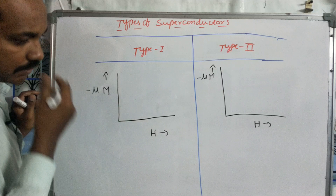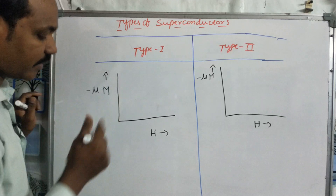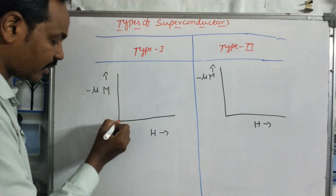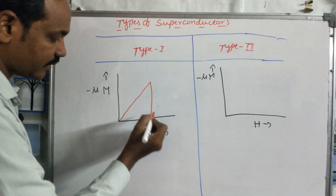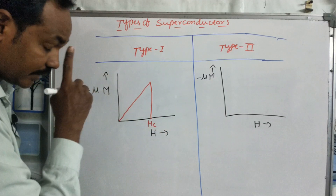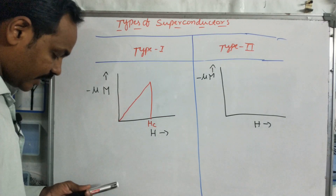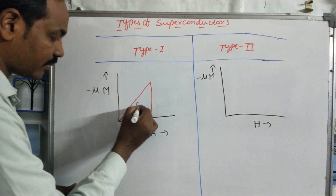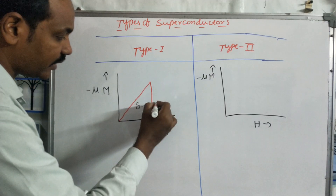In the graph, below the critical field Hc, the material behaves as a superconductor. The critical field is labeled Hc, and before this critical field the material is in the superconducting state.